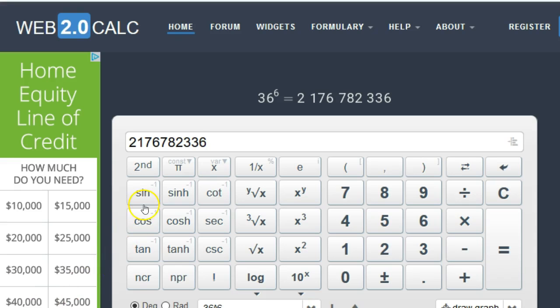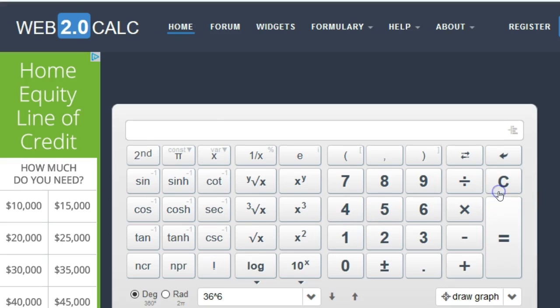Here's the Web 2.0 calculator. It has the factorial button too, right here. Let's do 6 factorial. I need to clear out what it had before. So 6 factorial, hit Enter. That's 720, because it's 6 times 5 times 4 times 3 times 2 times 1.